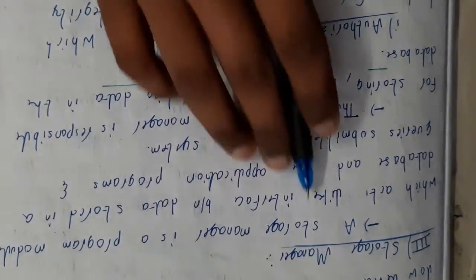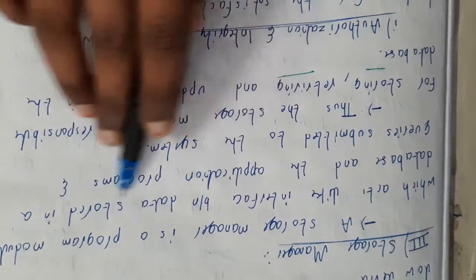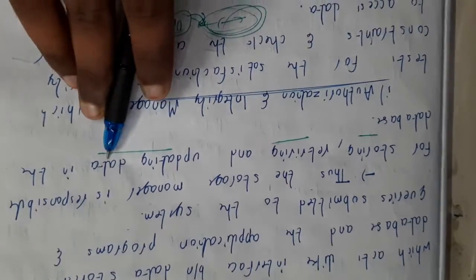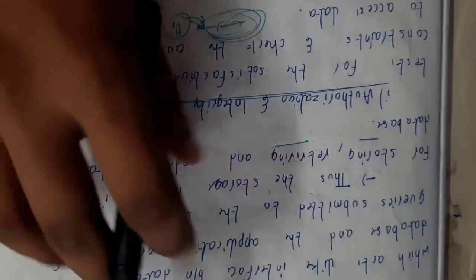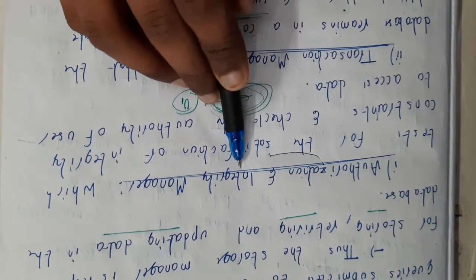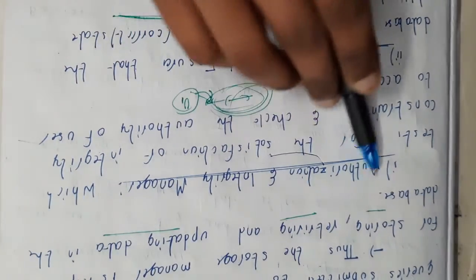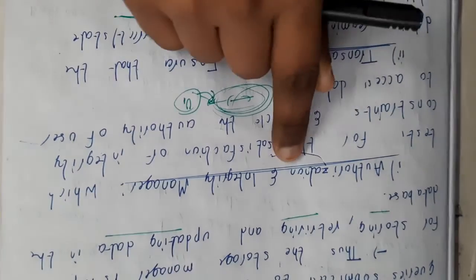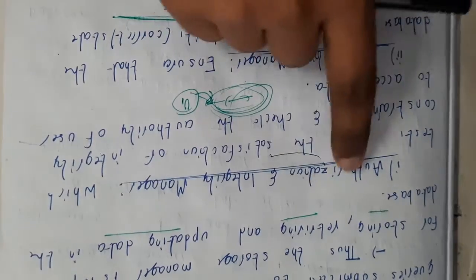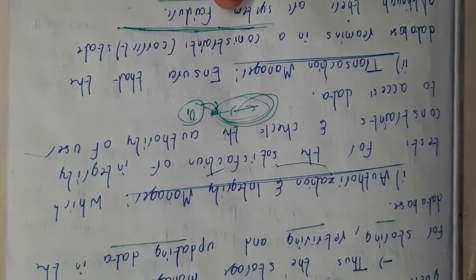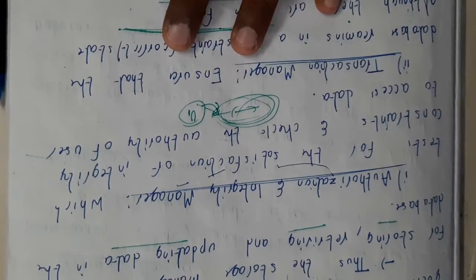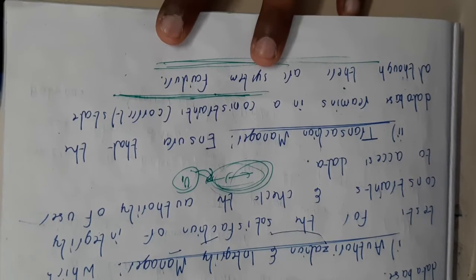Now let us go through storage management. Storage management is the process module which acts as an interface between the data storage in the database and the application program. The storage management is responsible for storing, retrieving, and updating the data in the database. Within it, we have authorization and integrity constraint module. Authorization asks for the username and password — it understands who you are and what rights you have. Integrity manager checks integrity constraints, such as uniqueness, and generates an error if a constraint is violated.